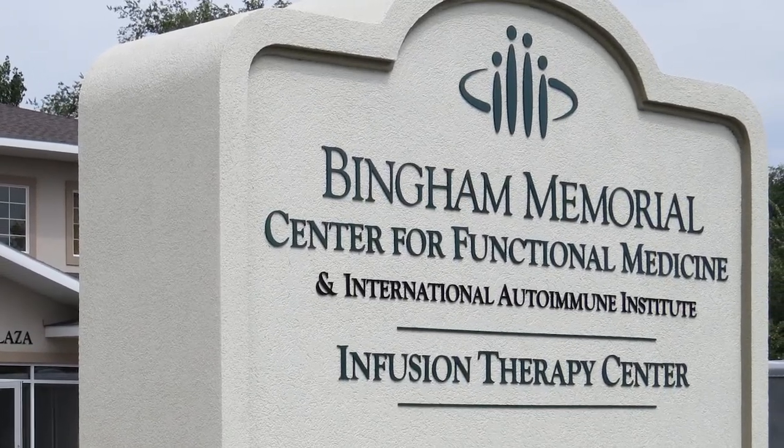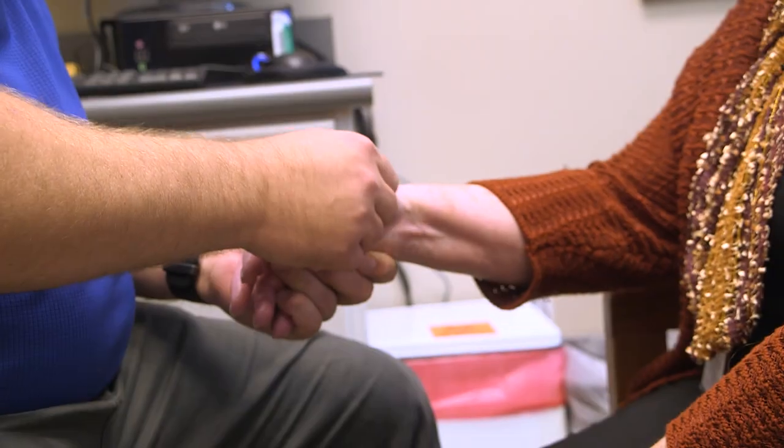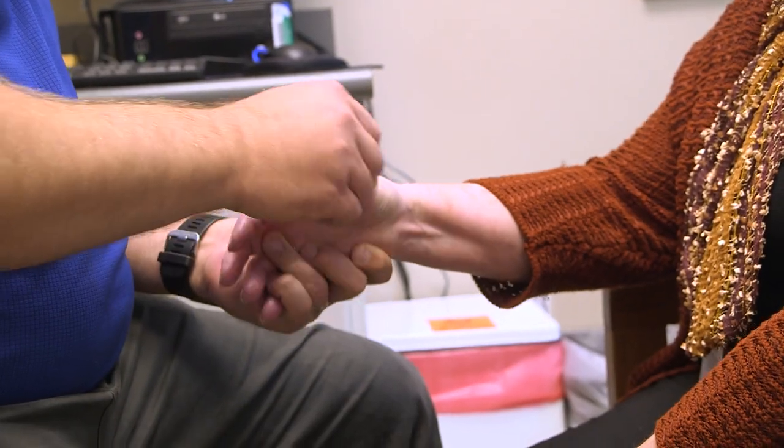So the next test we're going to talk about is a saliva test and it's saliva cortisol. Cortisol is a hormone that's made by the adrenal glands that sits on top of the kidney. Now they call cortisol the stress hormone. Vitally important for the immune system, vitally important for keeping away inflammation in the body. A good example of how it works to get rid of inflammation is in your body cortisol should turn into cortisone.